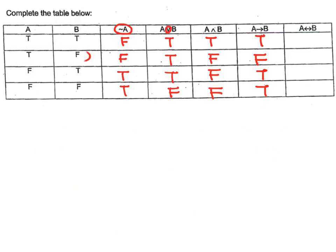Now for the biconditional statement, as I mentioned, they have to be the same. So true true is true. But true and false are not the same, so that's false, and false and true gives false as well. The last one is false and false — only because they're the same, we get true at the end. So these are the basic things we have to realize about logic.